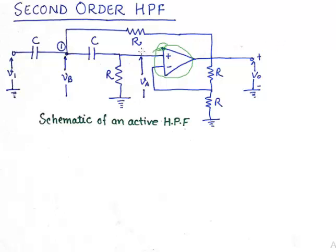If you have seen my previous video where we talk about second order low pass filter, we saw that the configuration was almost similar except for the fact that these capacitors were replaced by resistors and these resistors were replaced by capacitors in the second order low pass filter.